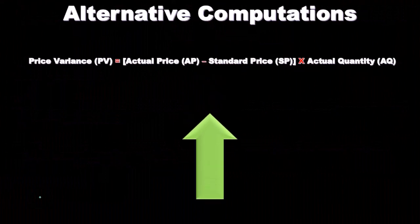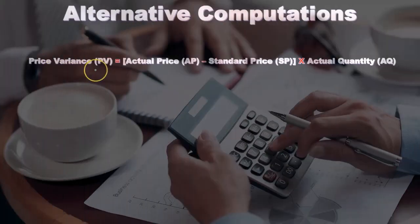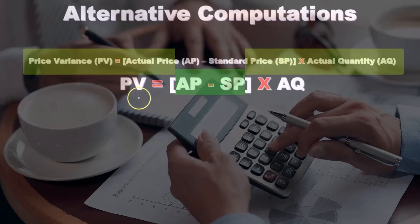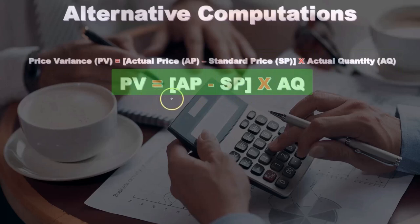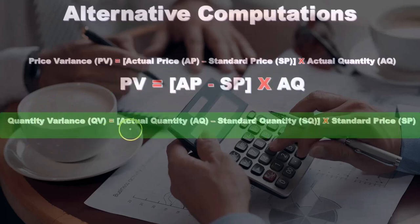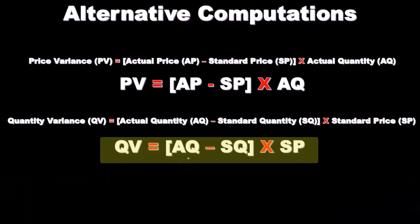Now, here are some alternative formulas that can be longer but may make more sense. The price variance (PV) equals the actual price (AP) minus the standard price (SP), multiplied by the actual quantity (AQ): PV = (AP − SP) × AQ. The quantity variance (QV) equals the actual quantity (AQ) minus the standard quantity (SQ), multiplied by the standard price (SP): QV = (AQ − SQ) × SP.